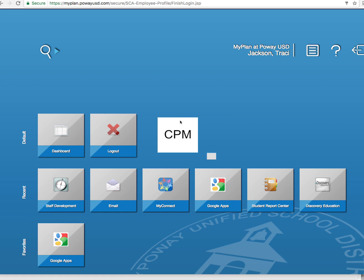There will be a tile for you. It will look different than this. My tile is not uploaded yet because it's summertime. But once you get into MyPlan, you should be able to click on a link that has CPM on it, and you'll go ahead and click on it, and it should take you to the login page.